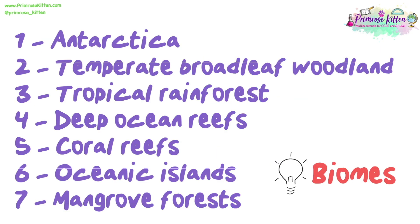We have seven biomes that we're going to look at: Antarctica, temperate broadleaf woodland, tropical rainforest, deep ocean reefs, coral reefs, oceanic islands, and mangrove forests.